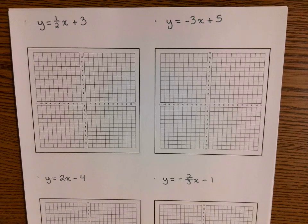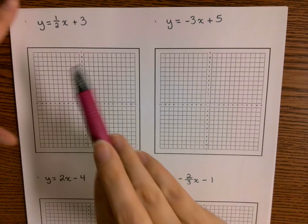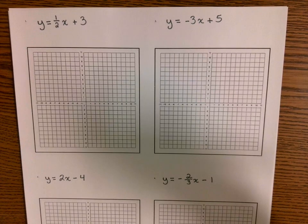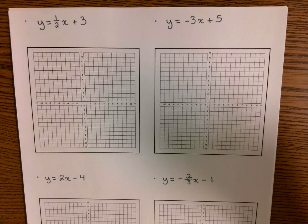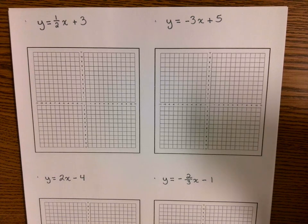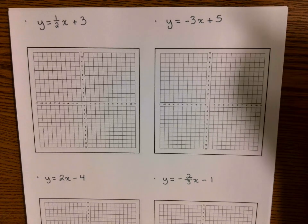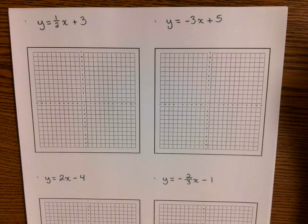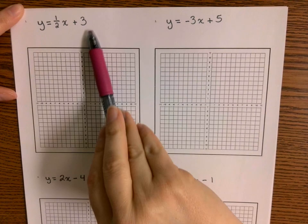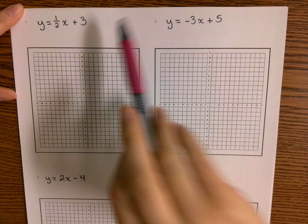When we are graphing an equation that's in slope-intercept form, what is the first thing that we graph? Think back to your notes. I should see a lot more hands raised than just a couple. When we're plotting this equation onto our graph, how do we know what's the first thing to graph?